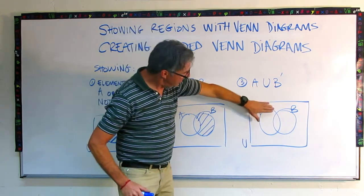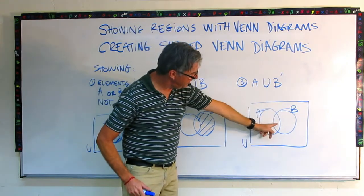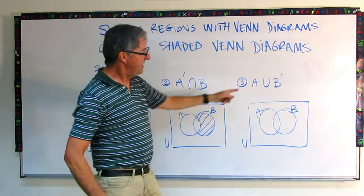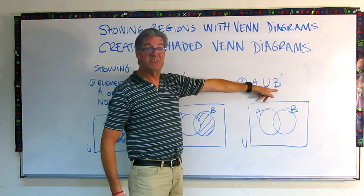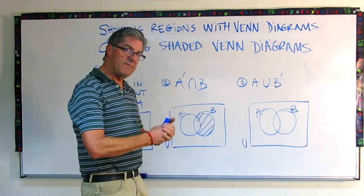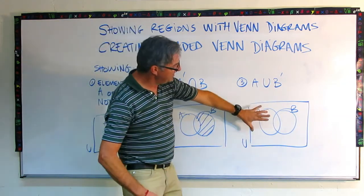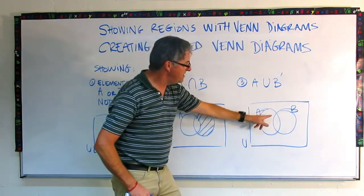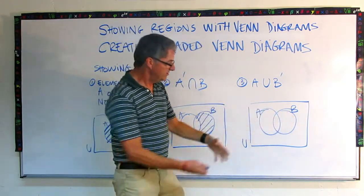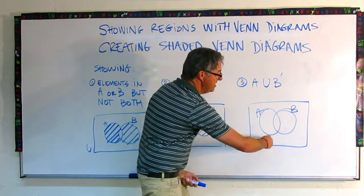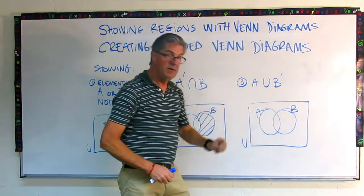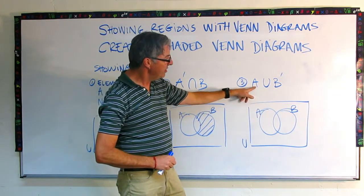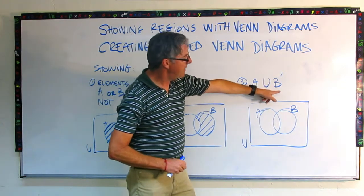So it's all of A. So this whole A circle, including the intersection, that's going to be shaded. And then the complement of B is also shaded. Now, thinking again about complements, complements of B is everything in this diagram that's not within the B circle. So it's all this outside area, but just not what's in B.